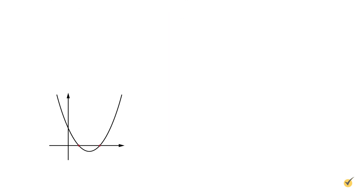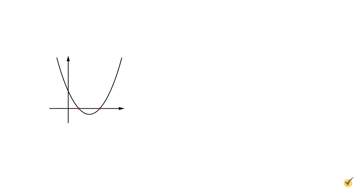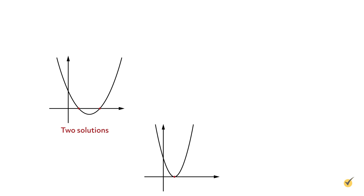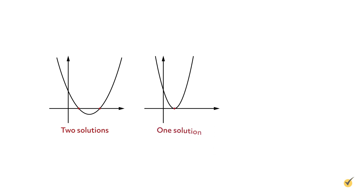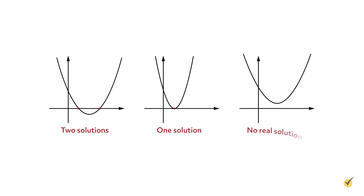If the graph of a quadratic function crosses the x-axis at two points, then the equation has two real rational solutions. These solutions are also called x-intercepts or roots. If it touches the x-axis at one point, it has one real rational solution. If the graph does not intersect the x-axis, then the equation has no real solutions.